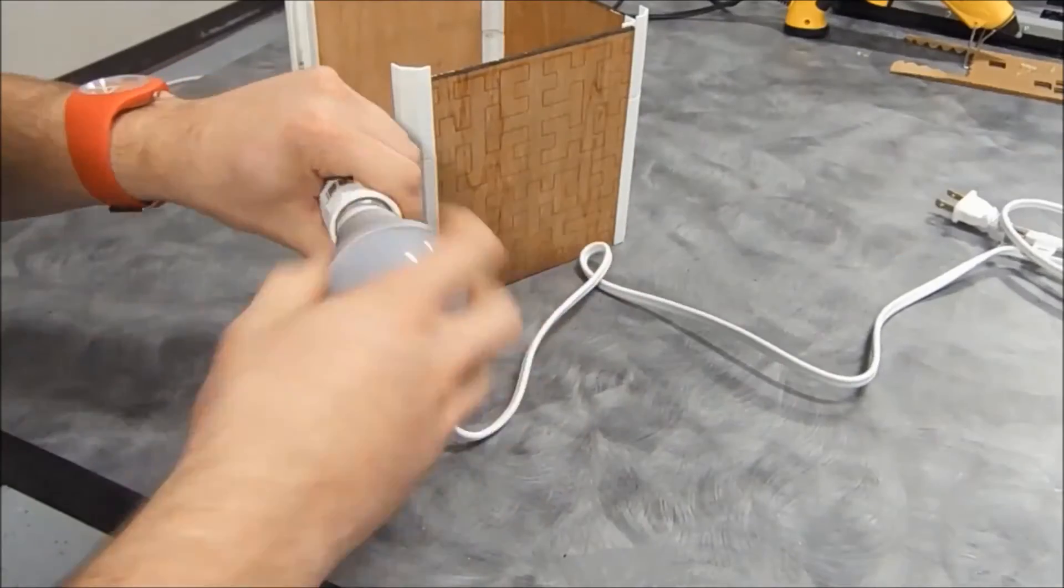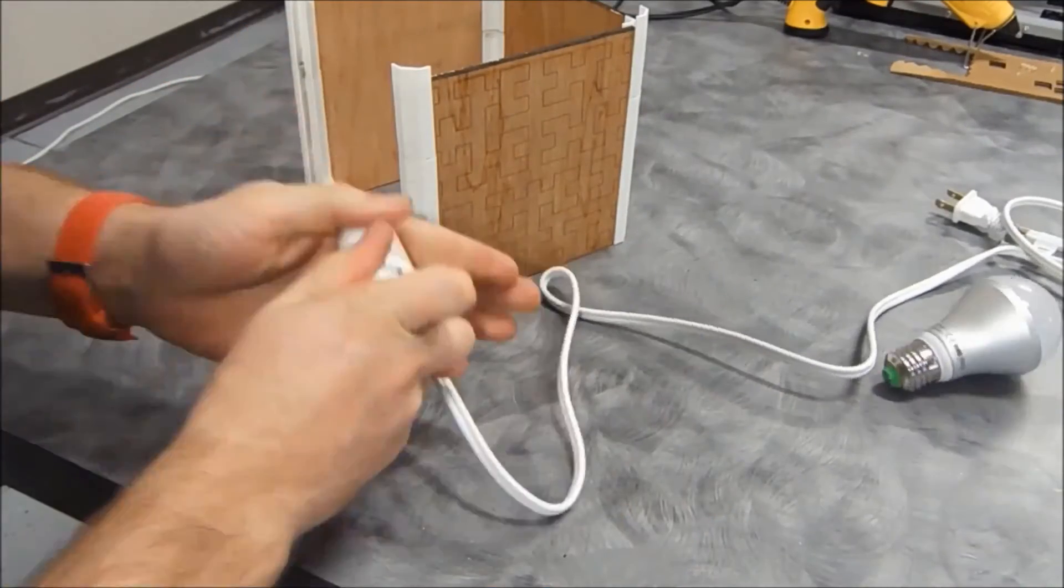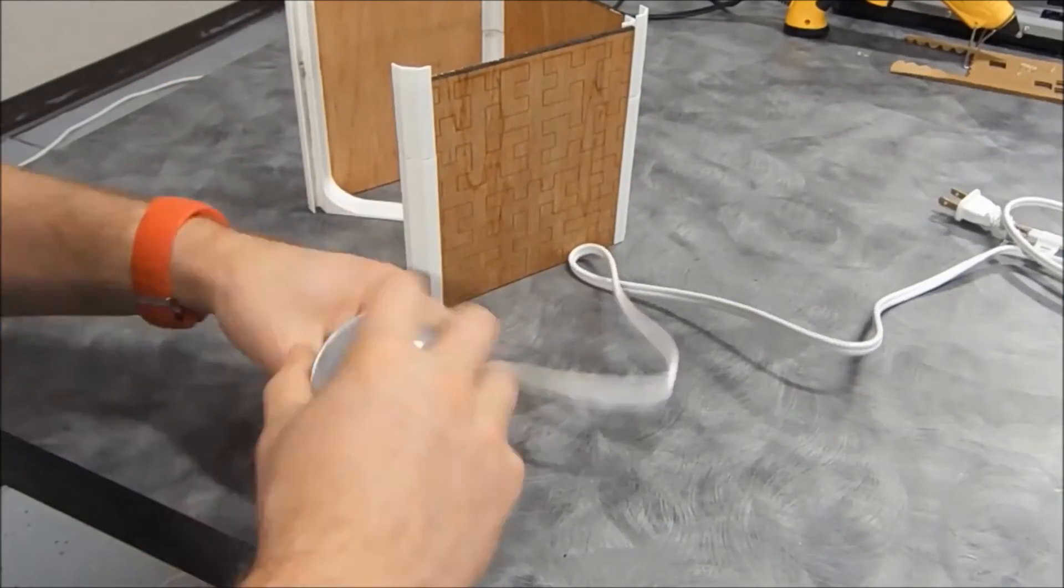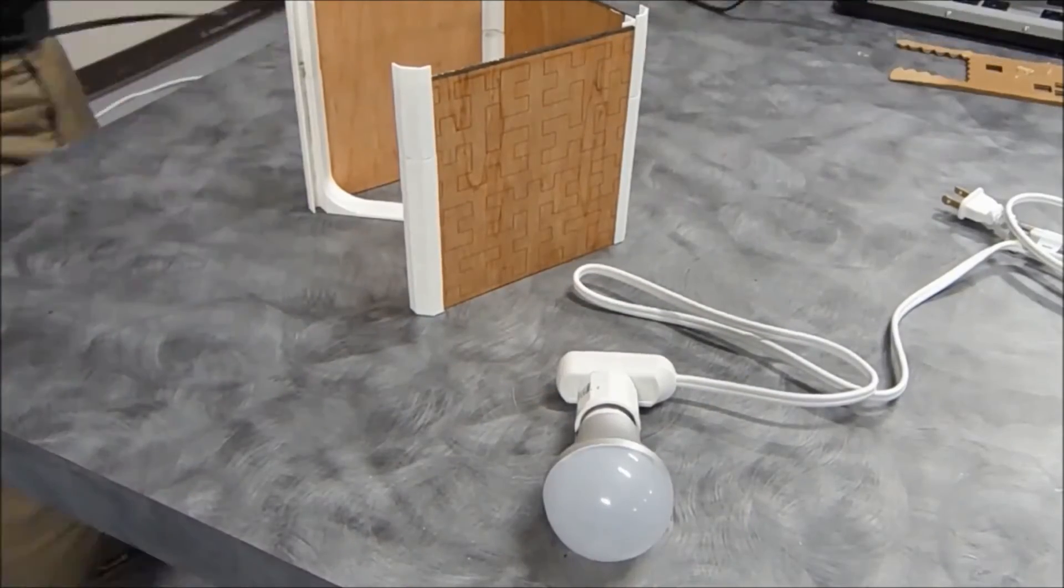The light bulb we're using is an RGB LED bulb available pretty inexpensively on Amazon Prime. There are a ton of different settings for colors and switching between them.